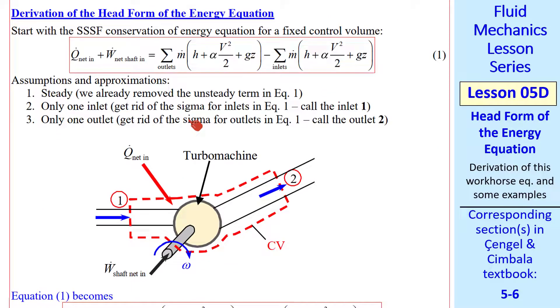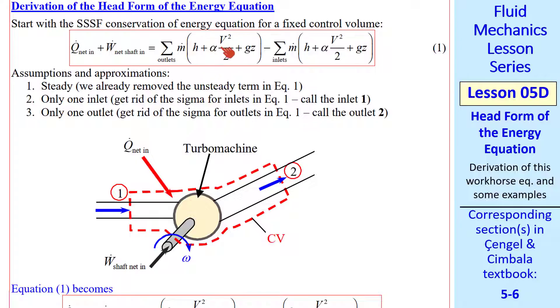Let's start with the steady state, steady flow, conservation of energy equation for a fixed control volume. Notice that we're including our alphas, the kinetic energy correction factors. We've already assumed steady flow. Now let's also assume we have only one inlet. That allows us to get rid of this sigma, and one outlet will get rid of this sigma. We'll always call the inlet 1 and the outlet 2.